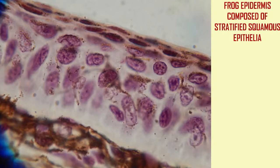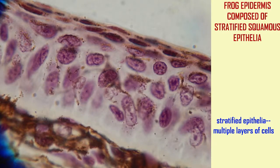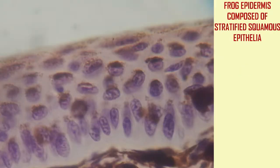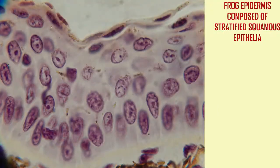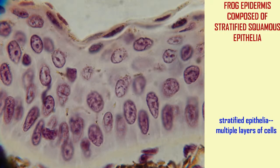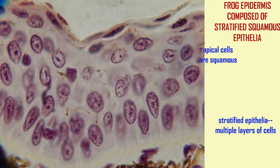The epidermis of frogs is also composed of stratified squamous epithelia — stratified because there are many layers of cells, and stratified squamous because the apical cells are squamous. They are flattened.